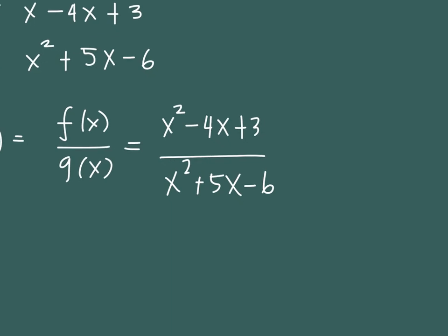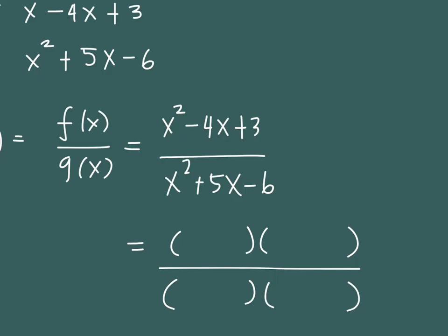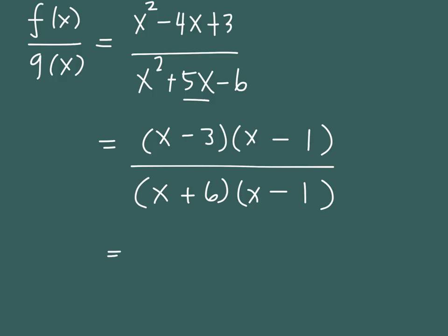As we can see, there are things we can do to simplify the expression. For quadratic expressions we can break them into binomial factors. x squared minus 4x plus 3 factors as x minus 3 times x minus 1. For x squared plus 5x minus 6, we get x plus 6 times x minus 1 — a positive 6 and a negative 1 give you the 5x. Then we cancel x minus 1 from numerator and denominator. The simplest form is x minus 3 over x plus 6.